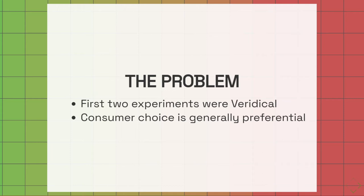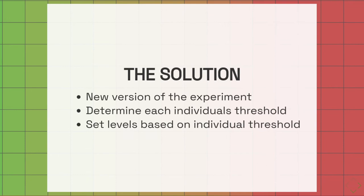There is a problem with both this experiment and a follow-up that had a different method of presenting the attribute information. These experiments are veridical. They're giving the participant a specific criteria to implement, rather than letting them exhibit their own preferences. The solution is to create a new version of this experiment where we determine each individual participant's threshold at the start of the task and then set those high, low, and distractor salience levels based on the individual's threshold.